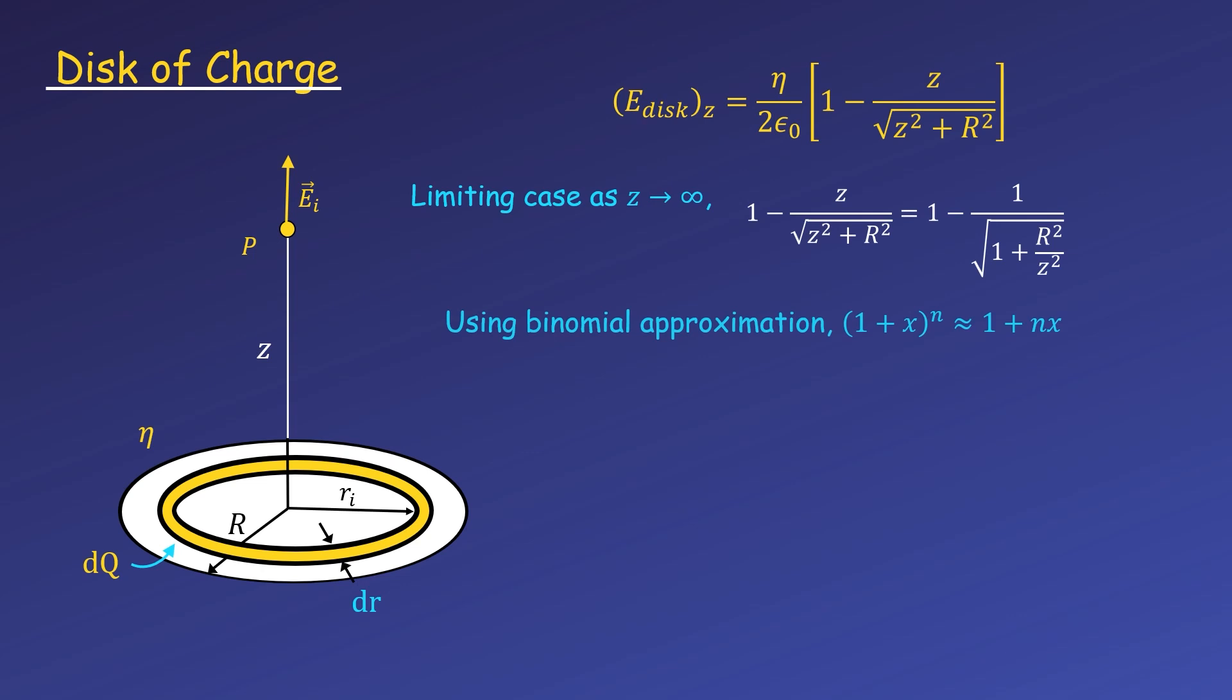The binomial approximation says that (1 + x)^n is approximately 1 + nx, when x is very small. In our radical, z is much greater than the radius capital R, so R² over z² is very small.